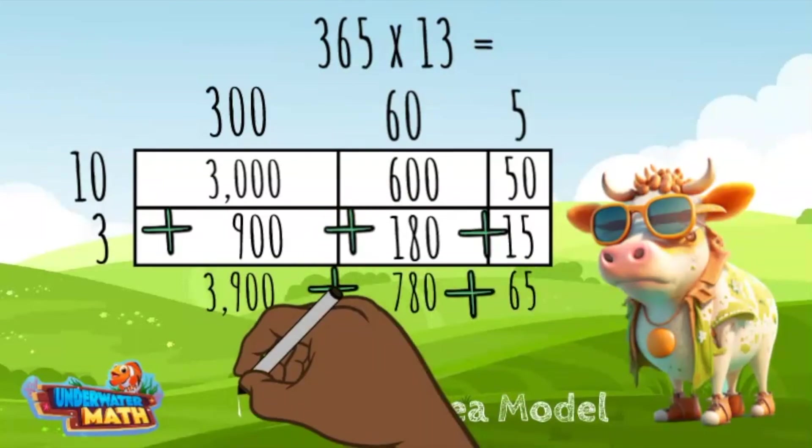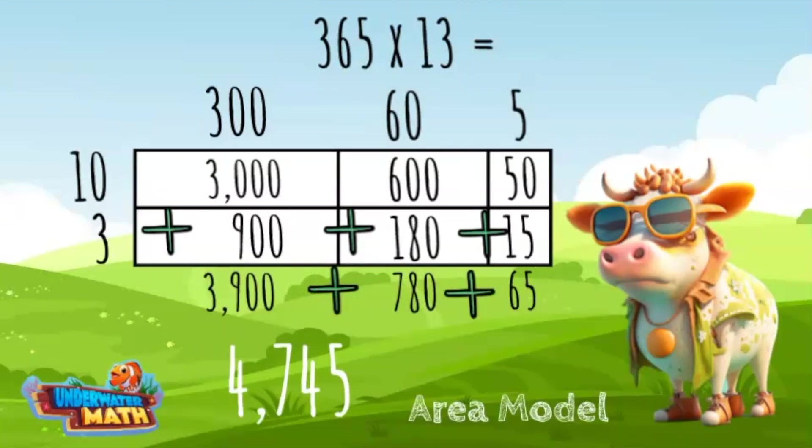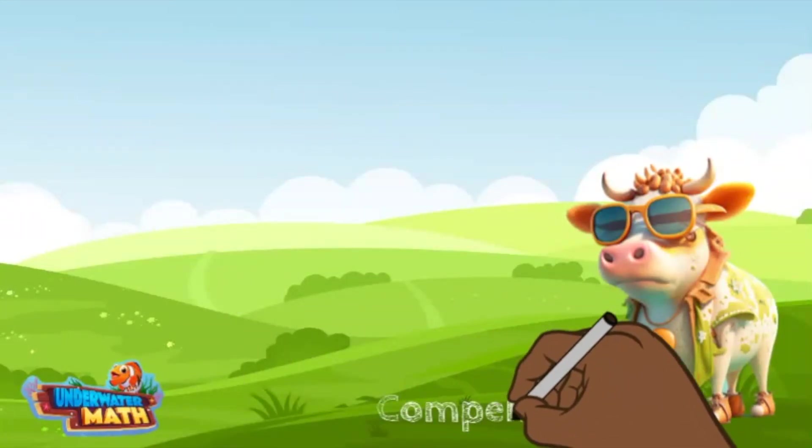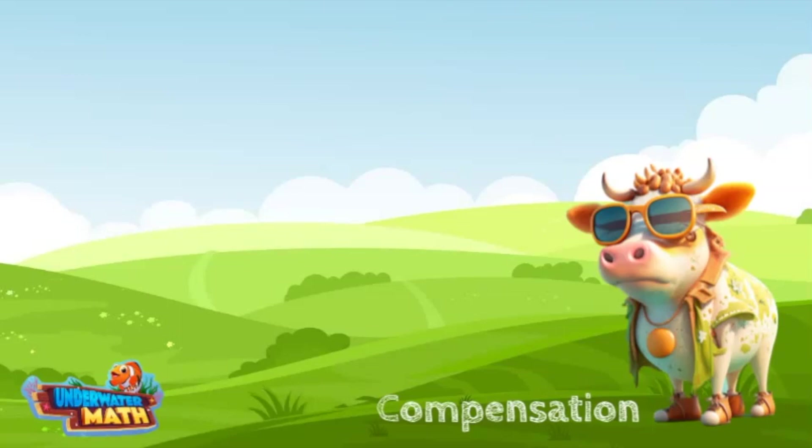Then I add the numbers across for a final total of 4745. The last strategy for today is called compensation. This strategy is helpful to use when one of the factors is close to a multiple of 10.